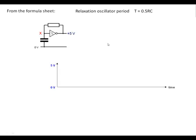Relaxation oscillator. Let's assume first of all that the capacitor has got no charge in it and we've got 0 volts across it. So the point X is going to be at 0 volts. Because this is an inverter, it means that the output here is going to be 5 volts.